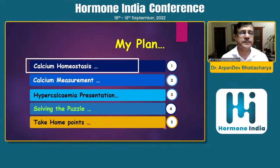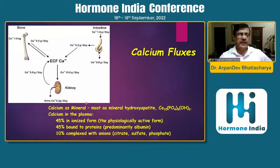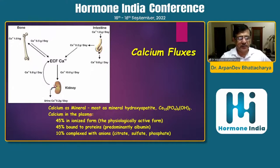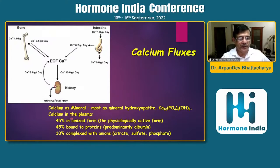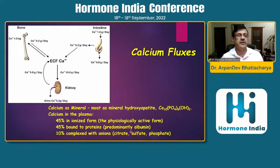Calcium homeostasis. As a mineral, most of the calcium is in the bone crystals. A very small portion is in the plasma. Of that plasma calcium, 45% is in ionized form, which is the physiologically active form. Another 45% is bound to protein, mainly albumin — and that's why we do albumin-corrected calcium.